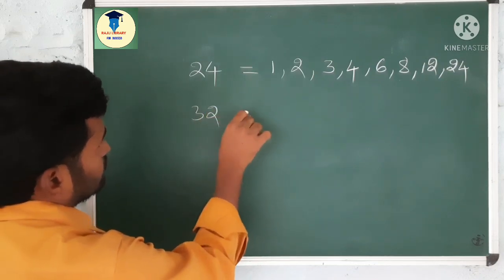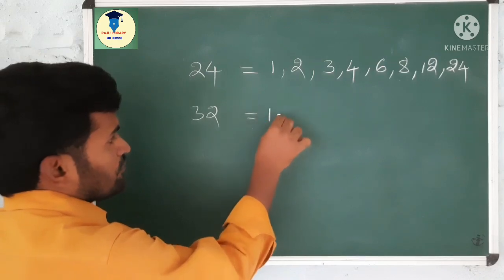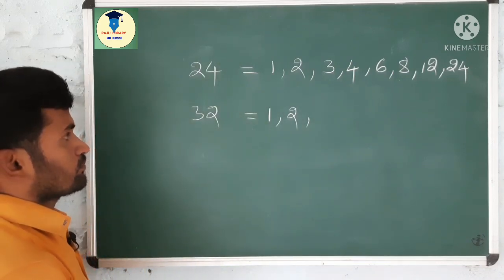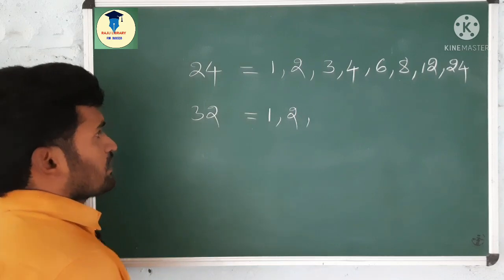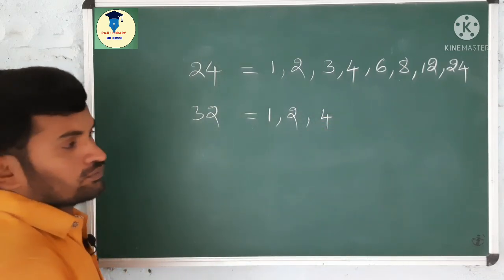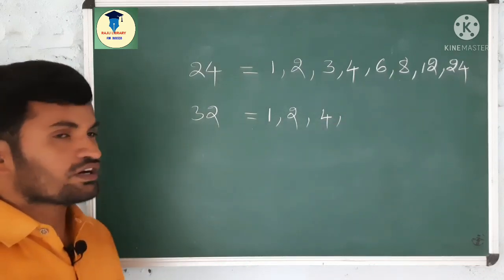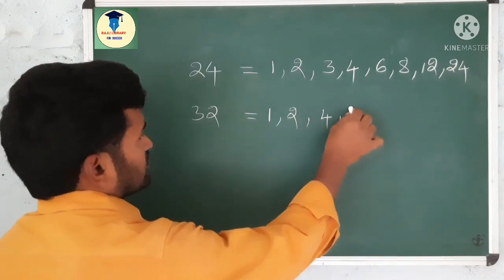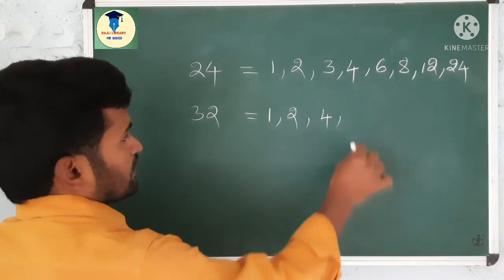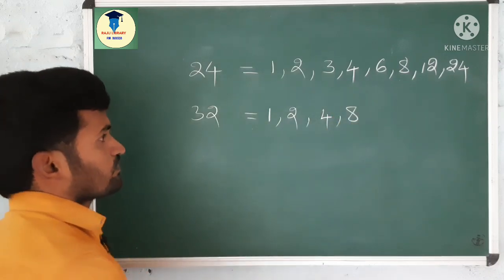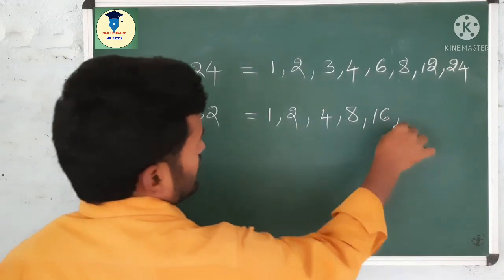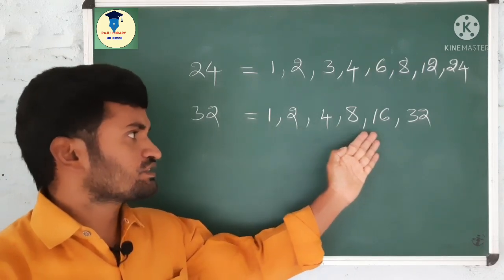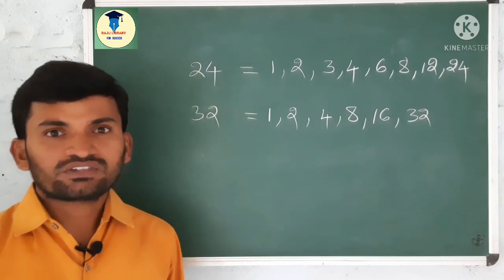If you take 32, what are the factors of 32? Here, 1 is a factor of every number. Next, 2: 2×16 is 32. Next, 3 is not a factor. 4: 4×8 is 32. 5 is not a factor. 6 is not a factor — because 6×5 is 36, 6×6 is 36. 7 is not a factor — 7×4 is 28, 7×5 is 35. Next, 8 is a factor: 8×4 is 32. Next, 16: 16×2 is 32. Next, 32: 32×1 is 32. So these are the factors of 32: 1, 2, 4, 8, 16, 32. Like that we can find the factors of any number.